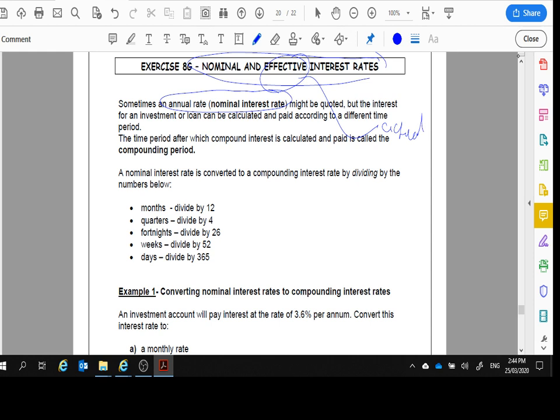Depending on if they're telling us it's charged annually, weekly, or monthly, this is how we convert them. If we're charged monthly, we divide by 12 because they give it to us always per annum. If it's quarters, divide by 4; fortnightly, 26; weeks, 52; days, 365.